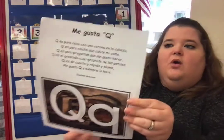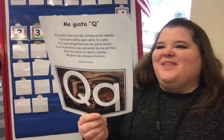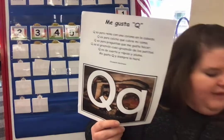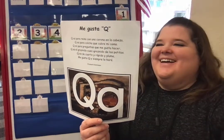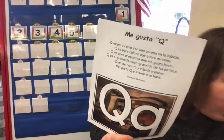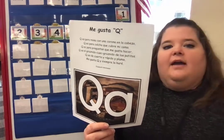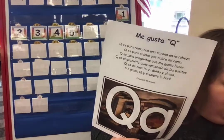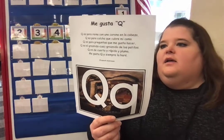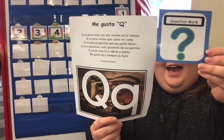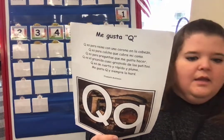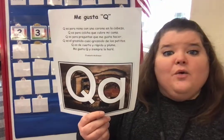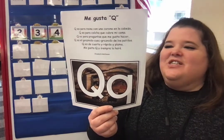We have been working on the letter Q. I want to read our Q poem from this week. Q is for queen with a crown on her head — we have a picture of a queen right here. Q is for quilts that covers my bed. Q is for question I like to ask, and Q is for ducks that go quack quack quack.